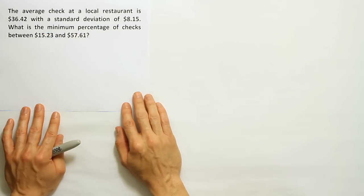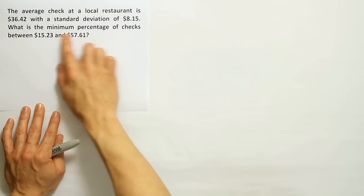And remember, Chebyshev's theorem can be used for any shape distribution. So I'm thinking that perhaps this is Chebyshev's theorem. Now if you think of Chebyshev's theorem, the first thing you should try to do is find K.